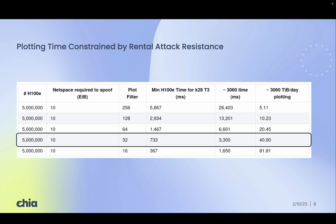Our initial target is to defend against 5 million H100s, which means plotting is intentionally slow. A 3060 GPU will max out at around about 40 terabytes per day. CPUs alone will be much slower, but potentially doable for small farms.